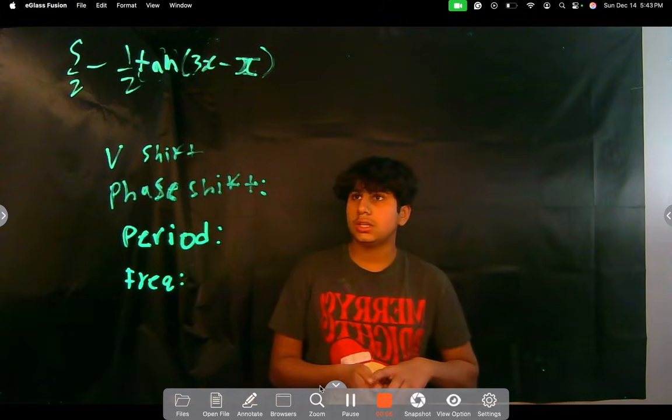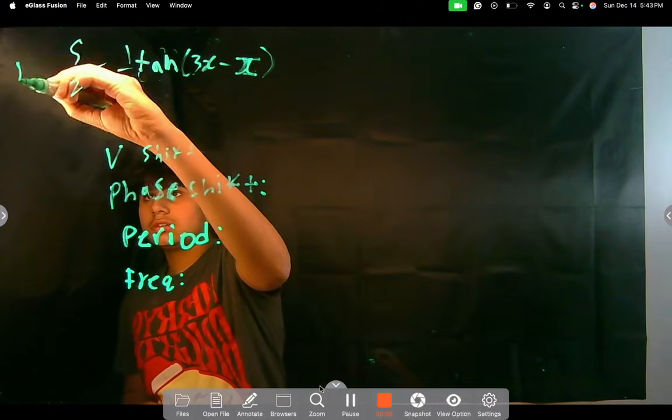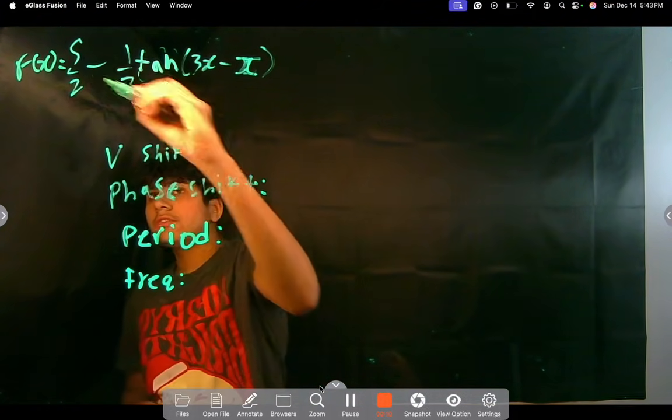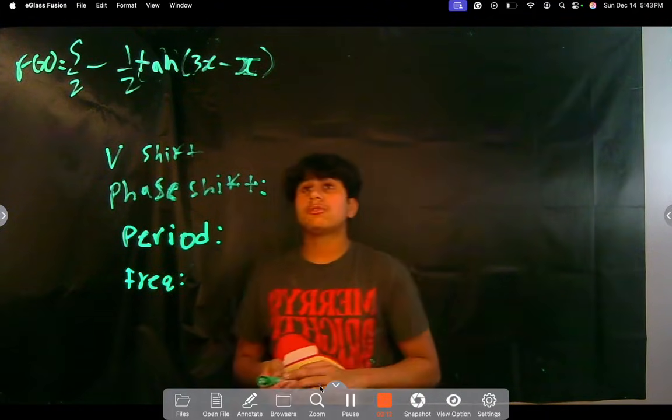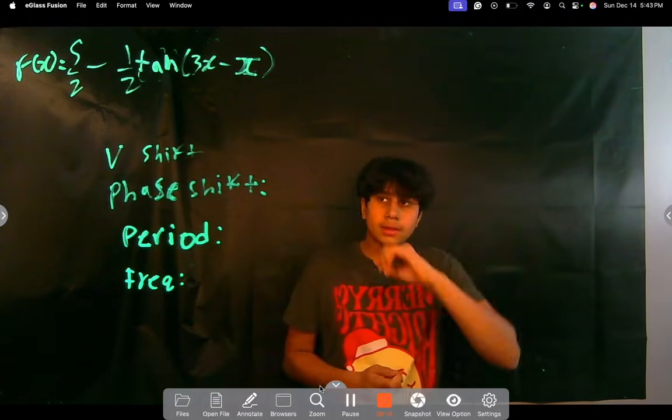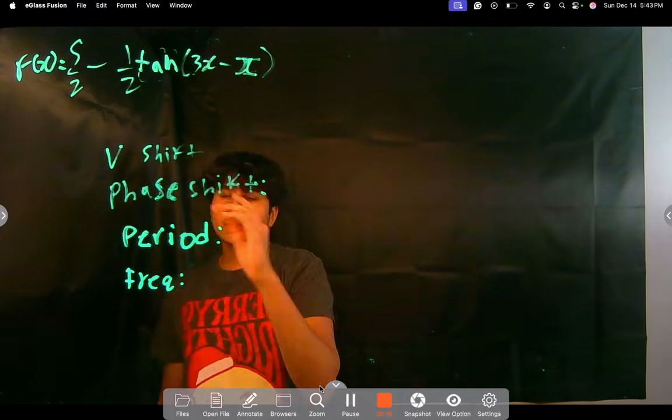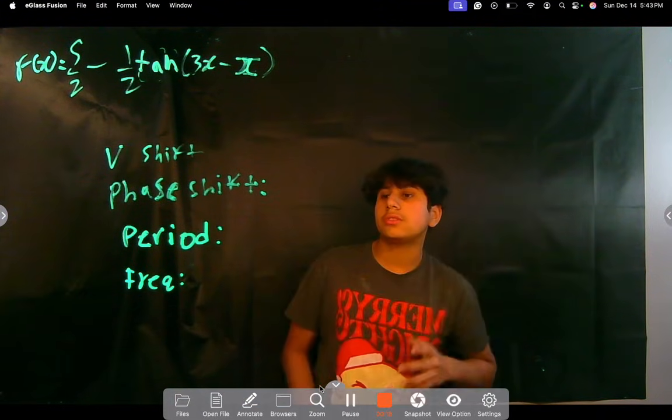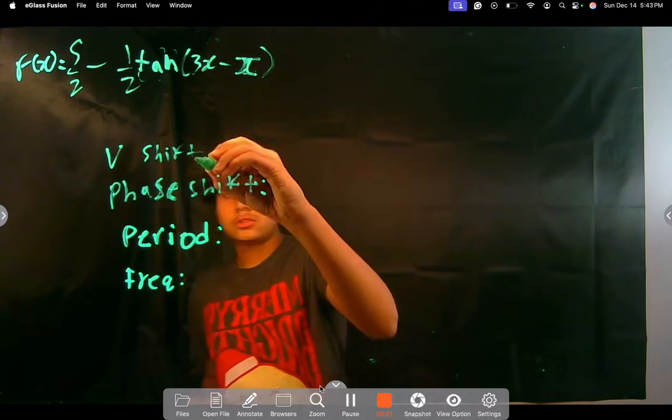We're given a function here: f(x) = 5/2 - 1/2 tan(3x - π), and we have to find the vertical shift, the phase shift, the period, and the frequency. So let's start.